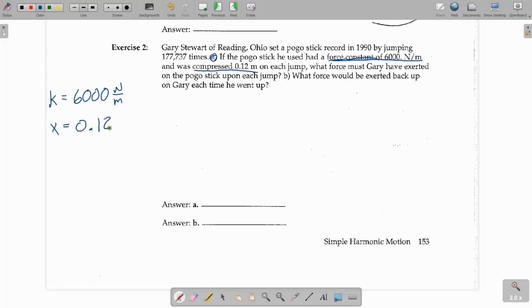And then it says, what force must Gary have exerted on the pogo stick upon each jump? So, this is asking us for the restoring force. I just want to be clear that the restoring force, not only the force that the spring would pull back on the object with, but also would be equal to, if you were to compress the spring or pull the spring yourself, that would be equal to the force that the spring would exert back on it once you let go.